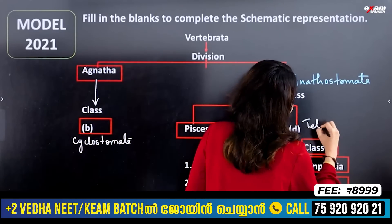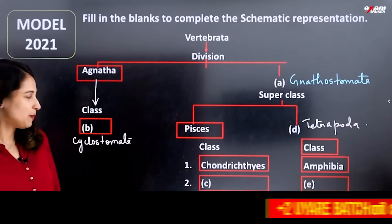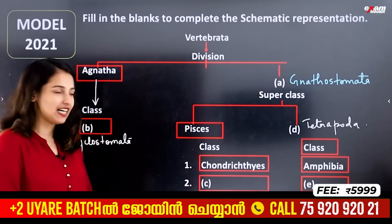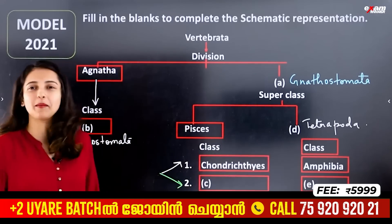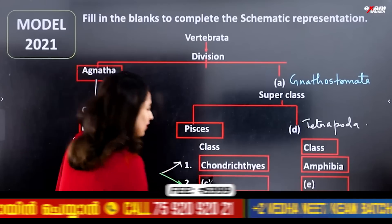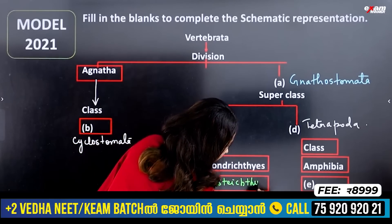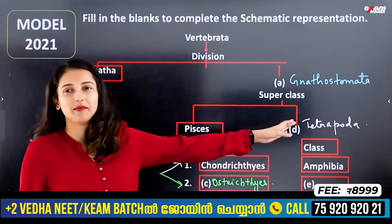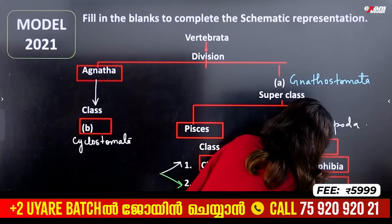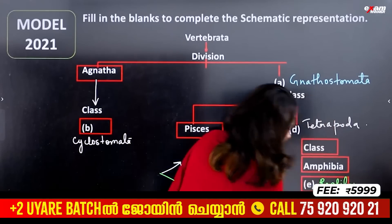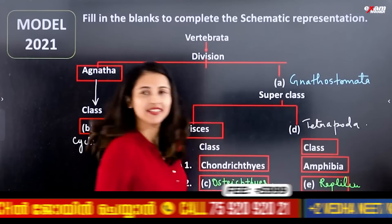Superclass Tetrapoda and Superclass Pisces. In Pisces, there are two classes: Chondrichthyes, which are cartilaginous fishes, and Osteichthyes, which are bony fishes. In Tetrapoda, we have four classes: Amphibia, Reptilia, Aves, and Mammals.